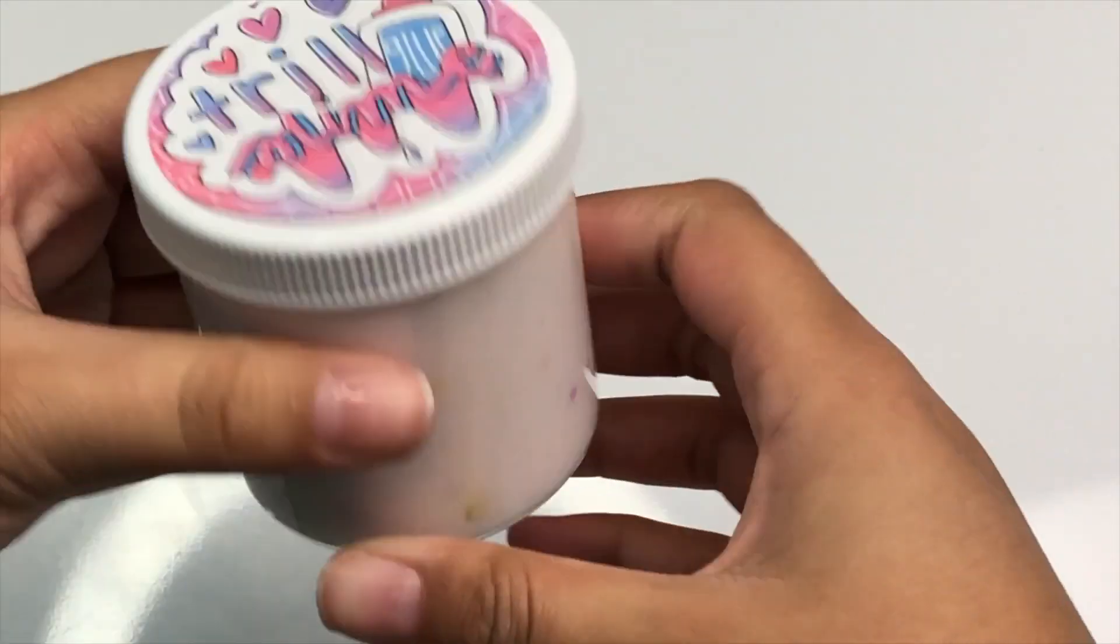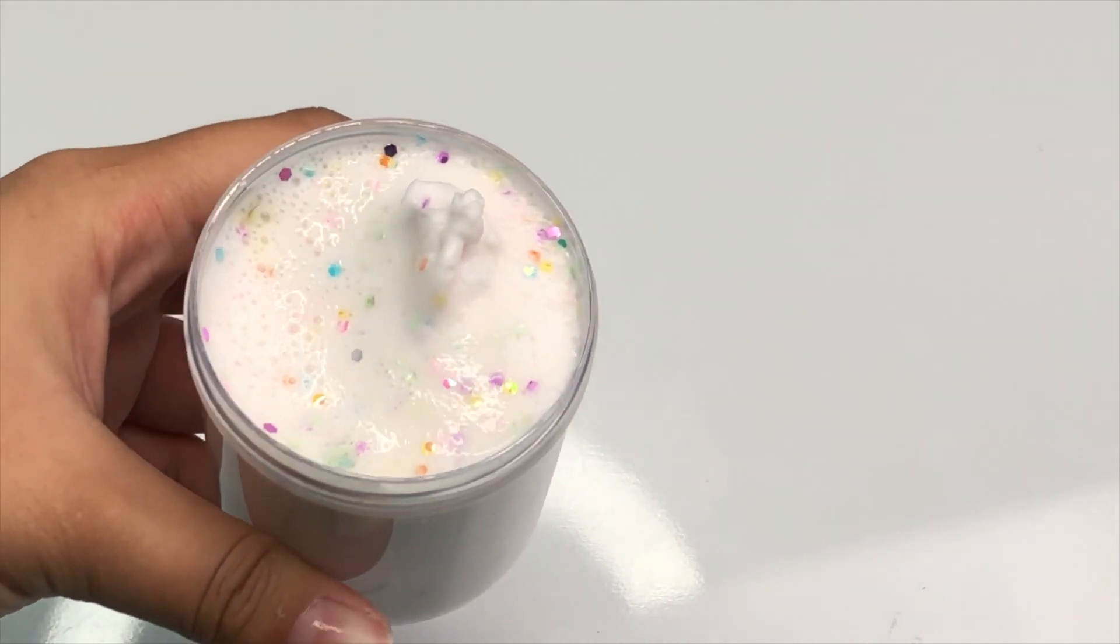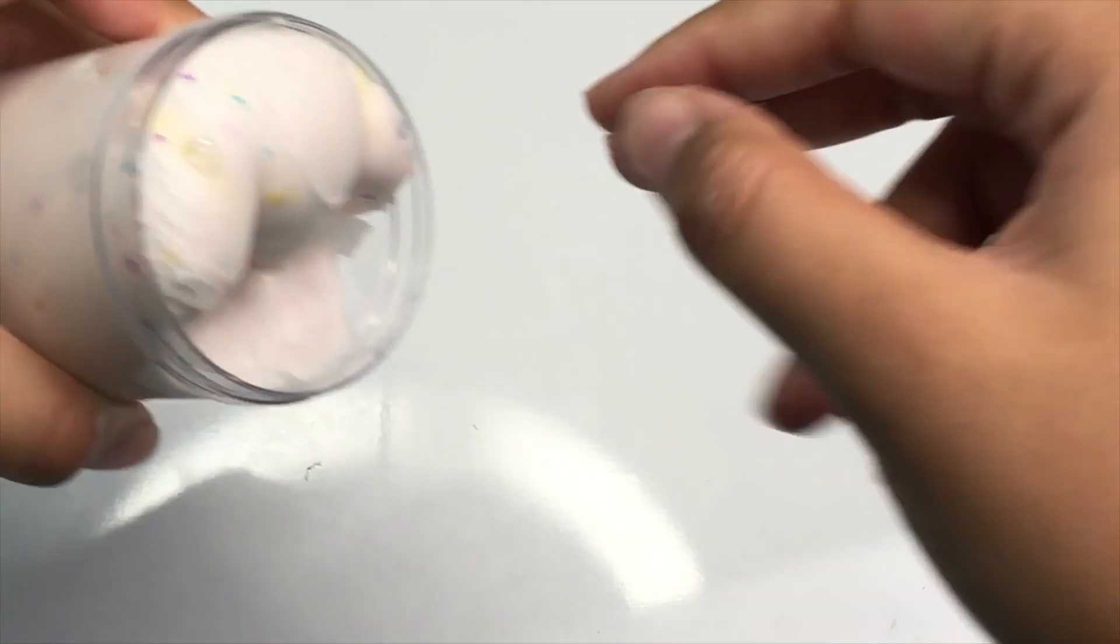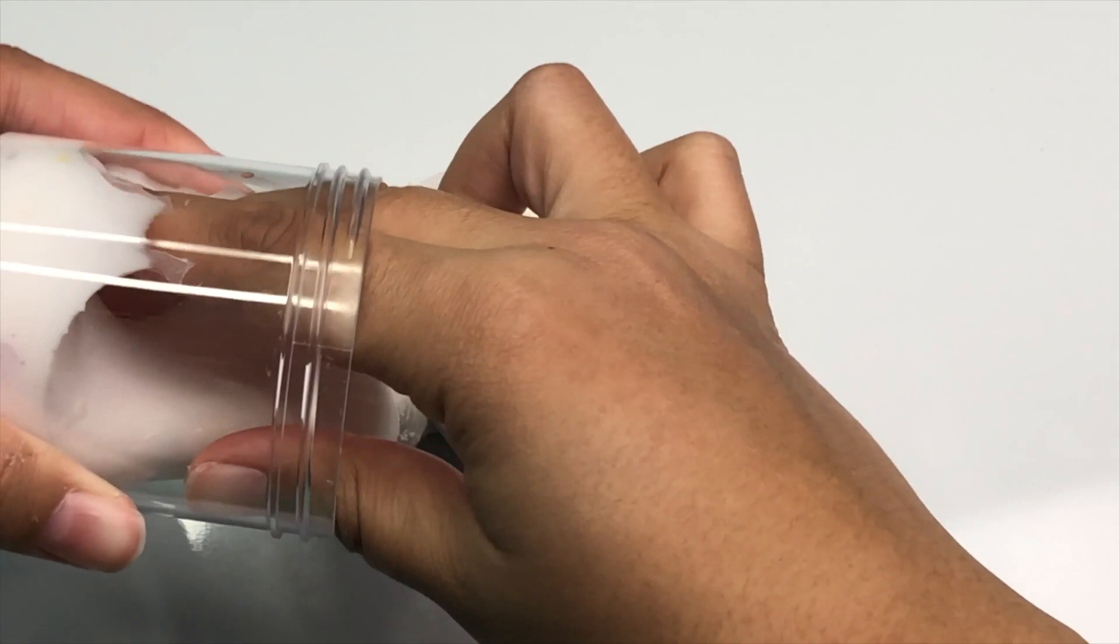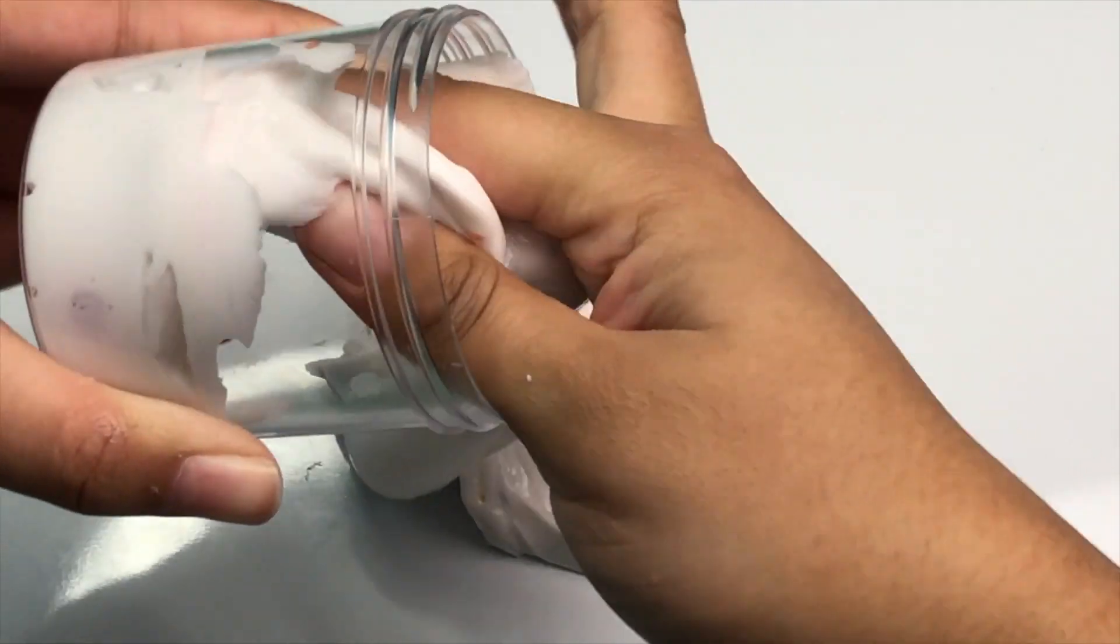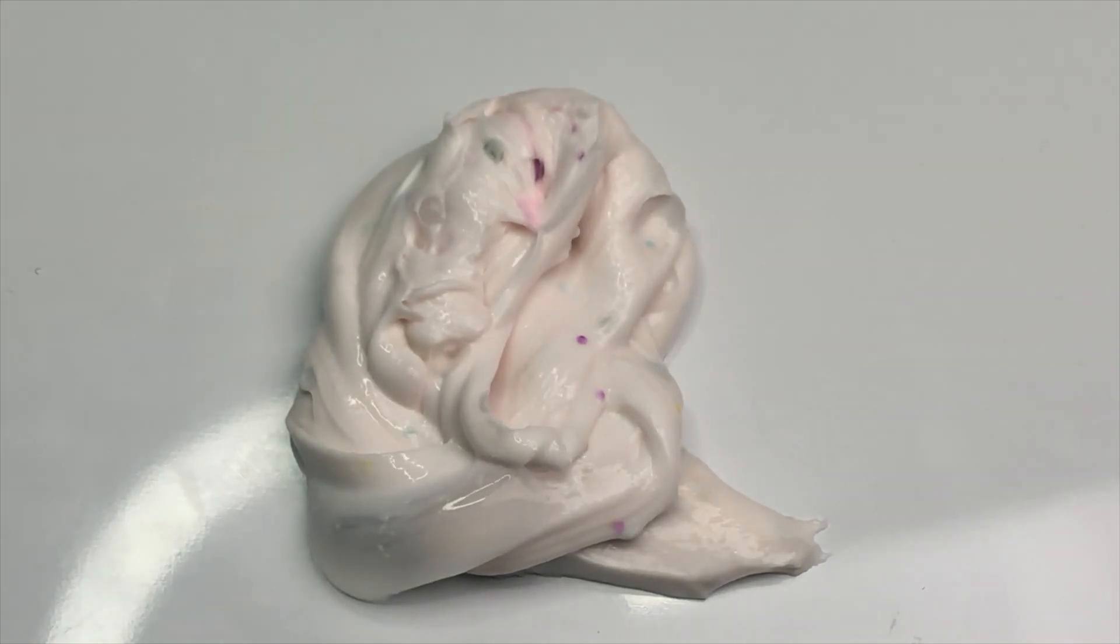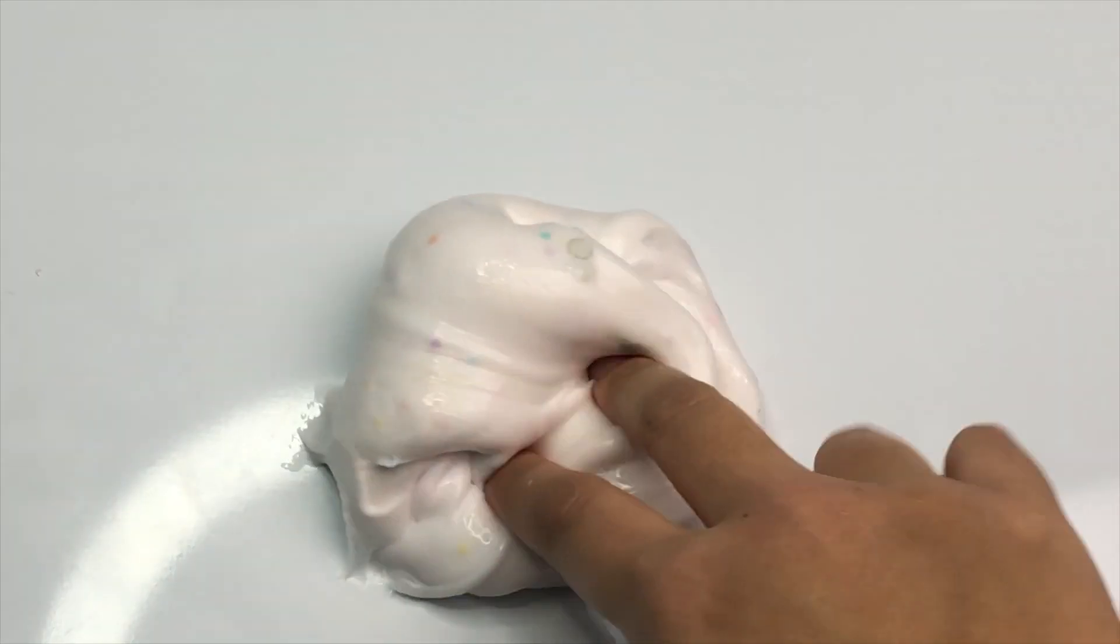The next slime is funfetti frosting. This one smells so so good. It smells like buttercream. It also has some confetti glitter throughout and this one just smells delicious. It's a really nice thick creamy base kind of just like a funfetti frosting kind of like store-bought frosting that you can get in the cans. So this one is a really nice texture. I love it so so much and I know you guys will like it as well and it smells delicious.